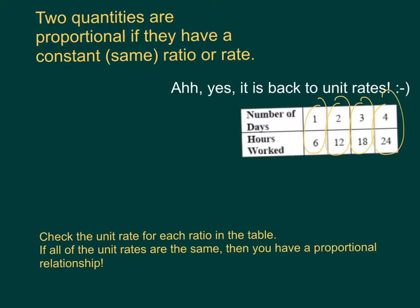The table we're looking at says number of days compared to hours worked. This is a running total table: day one is a total of six hours worked; after two days, 12 hours have been worked; after three days, 18 hours; and after four days, 24 hours worked. That doesn't mean the person worked 24 hours straight — it's a cumulative idea. In order to determine whether the person worked the same number of hours each day, we need to find the unit rate for each value.